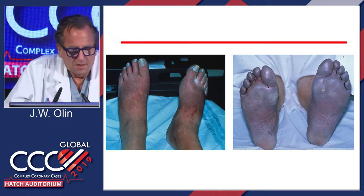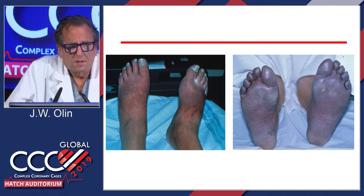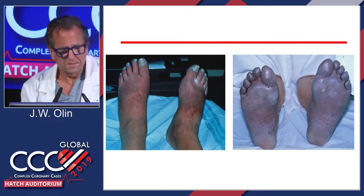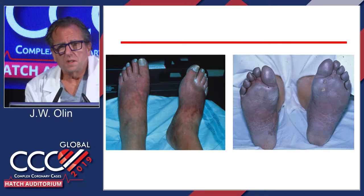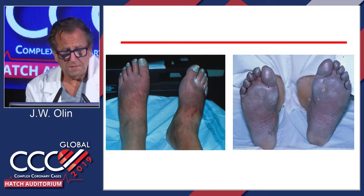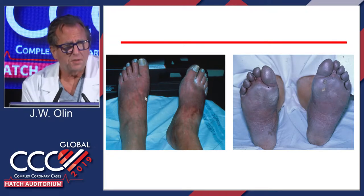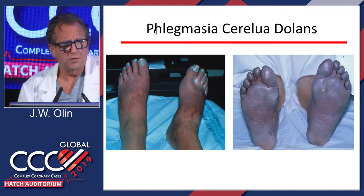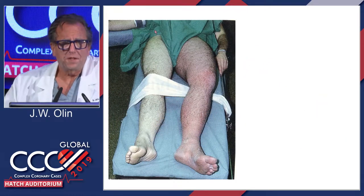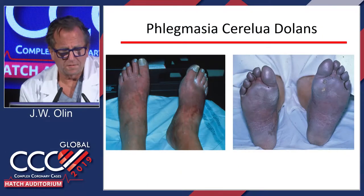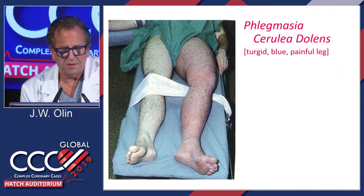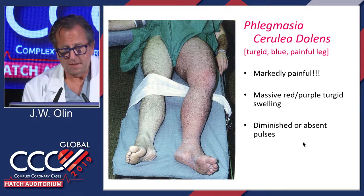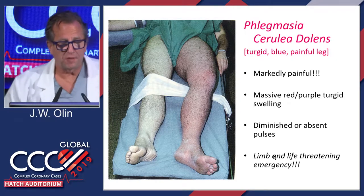You go by in the hospital and see this patient — the diagnosis can be made just from looking at the picture. The feet are cyanotic, there are dilated veins. You don't get dilated veins predominantly in arterial disease. This is phlegmasia cerulea dolens — iliofemoral deep vein thrombosis. It is very painful, with a massive red-purple leg, diminished or absent pulses. This is a limb-threatening, life-threatening emergency.